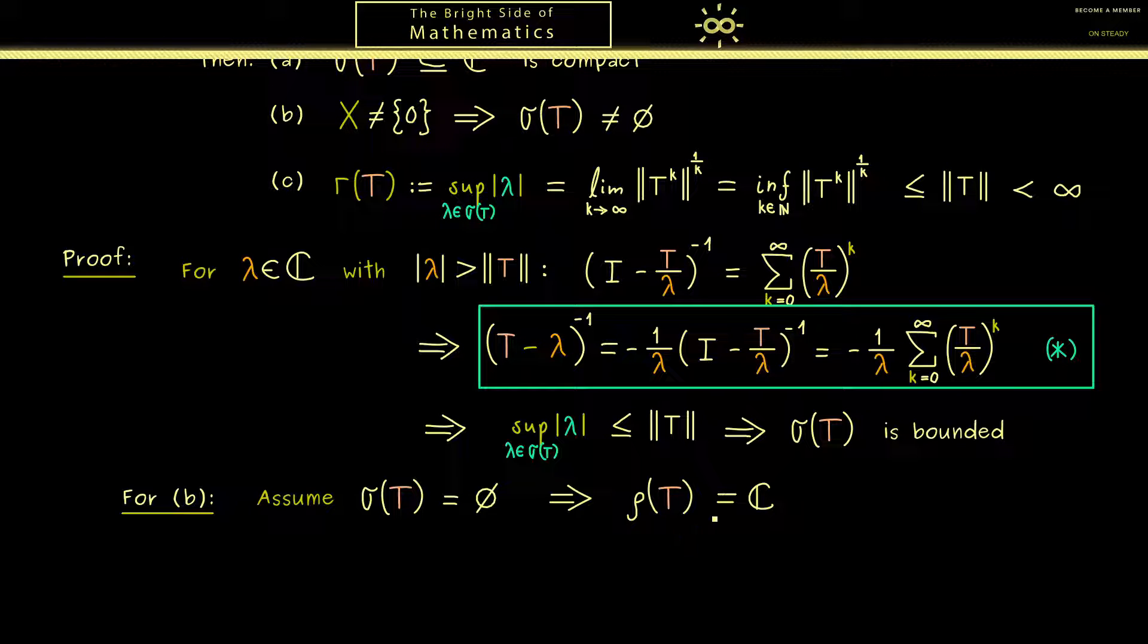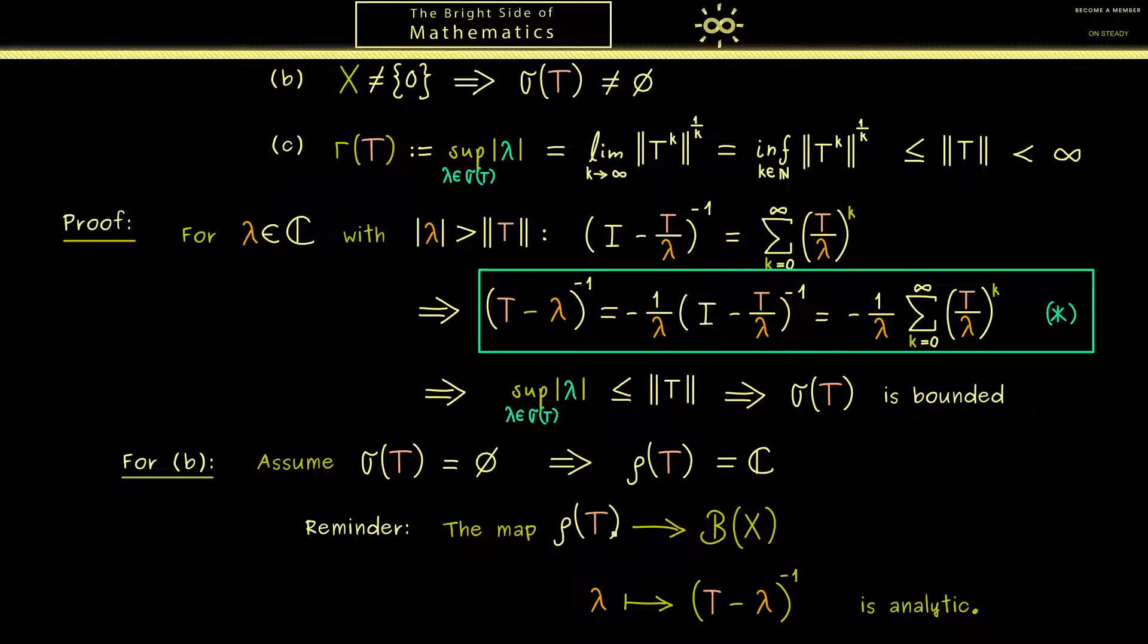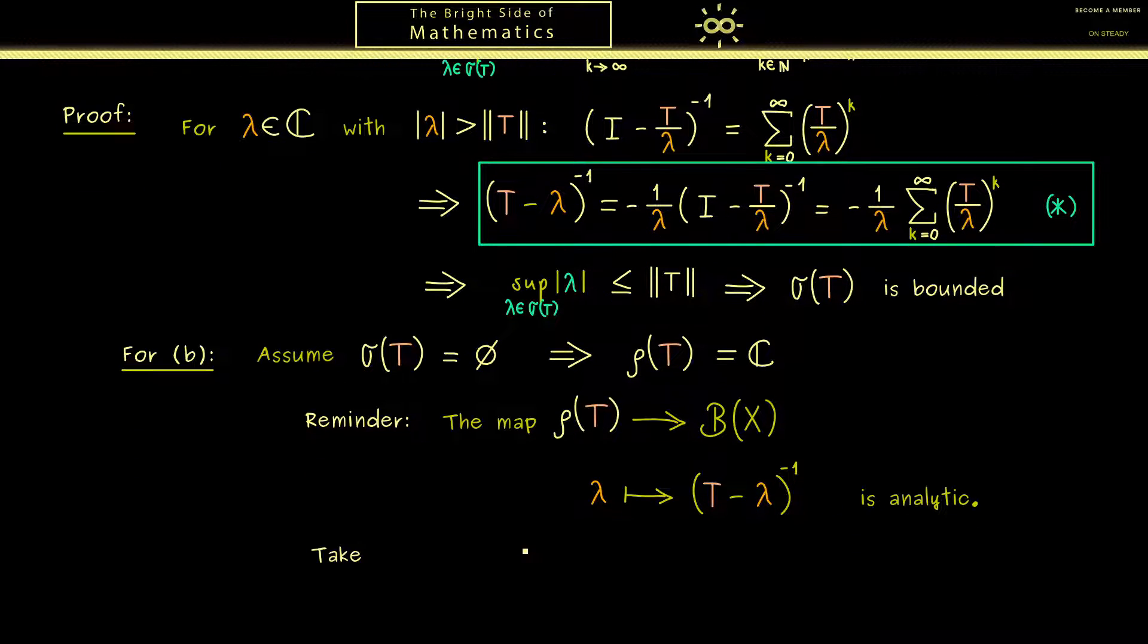And now you can recall the fact that the resolvent map is an analytic map. More concretely, the map that takes lambda and sends it to T minus lambda inverse can be locally expressed by a Taylor series. This is what we have shown last time and now we can use it. Okay, since you know a lot of functional analysis at this point, it shouldn't be a problem for you when we now use the dual space of B(X). This space of bounded linear operators is a Banach space. Therefore it has a well-defined dual space, which I always denote with the prime.